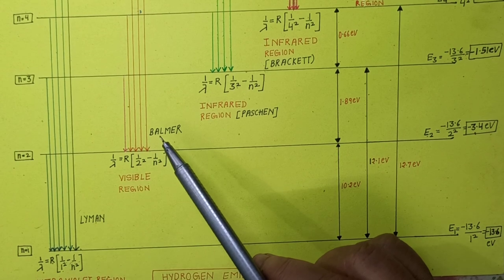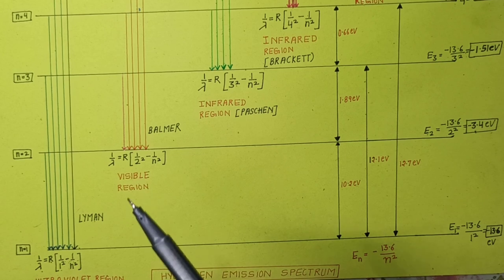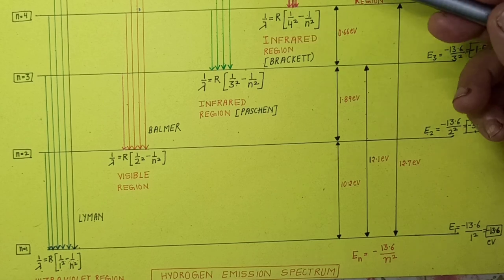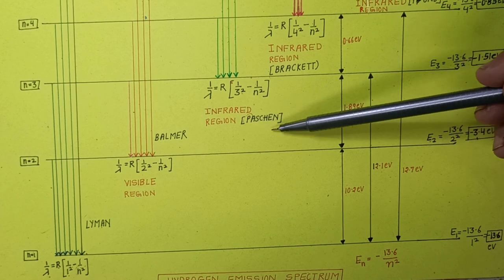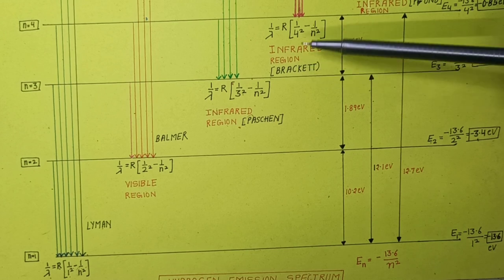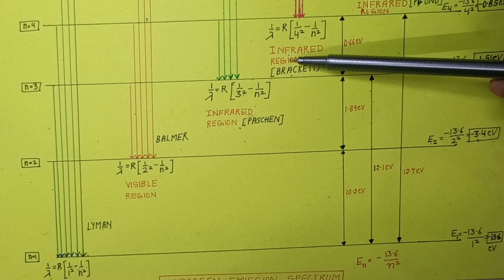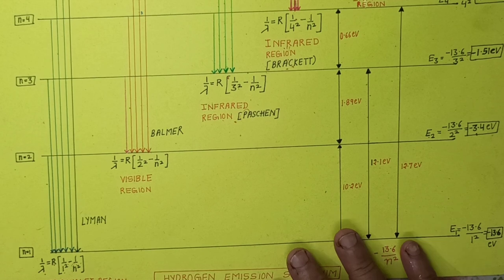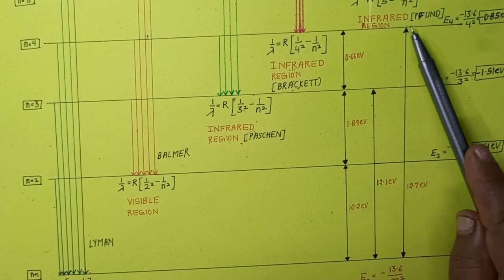Any transition taking place from a higher state to n equal to 2 gives rise to the Balmer series, which lies in the visible region. Any radiation emitted because the electron transitions from a higher state to n equal to 3 gives rise to the Paschen series, which lies in the infrared region. Transitions from higher state to n equal to 4 give the Brackett series (also infrared), and transitions to n equal to 5 give the Pfund series (also infrared).